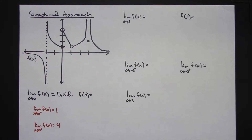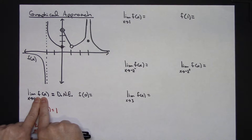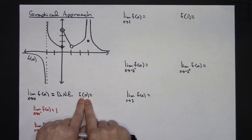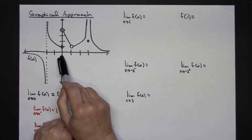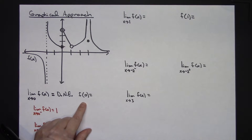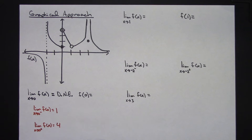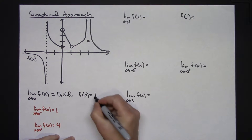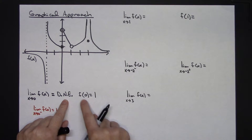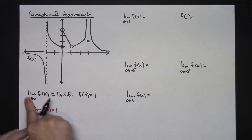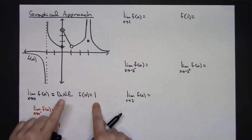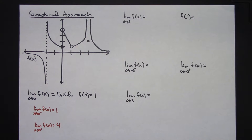Now I want to compare the limit as x approaches 0 to just the plain value of the function, f of 0. What do I get when I plug 0 into the function? At 0 there's an open dot — that's not part of the function — but the closed dot right there is at 1, so f of 0 equals 1. This illustrates that the value of the function has no bearing on the limit; those two answers are not the same and have nothing to do with each other.